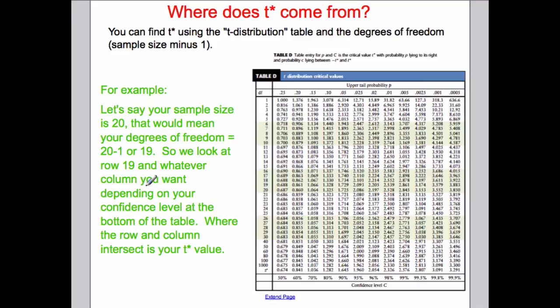Where does t star come from? You can find t star using the t distribution. Same spot where you'd find z distribution. Z was down below. Here's z star and then your confidence level is down here. When we move into a t star, we have to use different rows and each one of these rows represents our degrees of freedom. Then we figure out what confidence level we're interested in. Let's say your sample size was 20. That would mean your degrees of freedom is 19. I'm looking at this row right here. Depending on your confidence level at the bottom of the table, where the row and the column intersects is your t star.